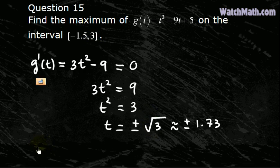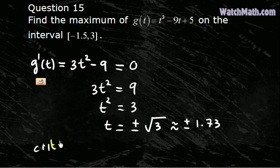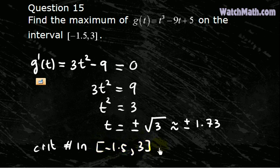So critical numbers in the interval negative 1.5 to 3 is square root of 3.